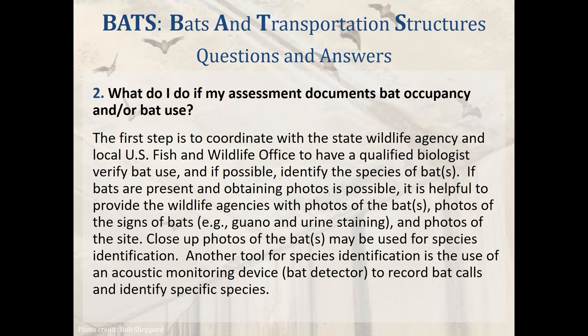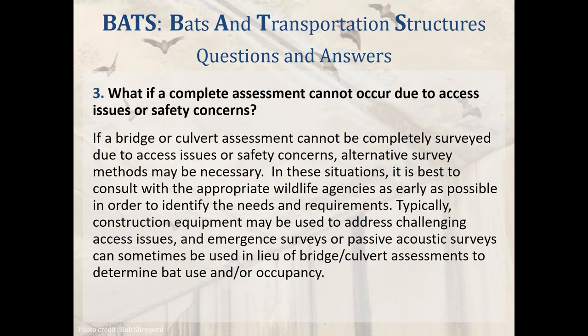Question 2: What do I do if my assessment documents bat occupancy and/or bat use? The first step is to coordinate with the state wildlife agency and local U.S. Fish and Wildlife Office to have a qualified biologist verify bat use and, if possible, identify the species. If bats are present and obtaining photos is possible, it's helpful to provide wildlife agencies with photos of the bats, photos of signs of bats such as guano and urine staining, and photos of the site. Close-up photos of bats may be used for species identification. Another tool for species identification is the use of an acoustic monitoring device — a bat detector — to record bat calls and identify specific species.